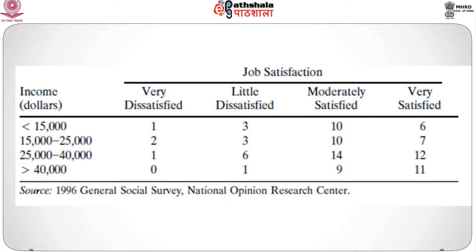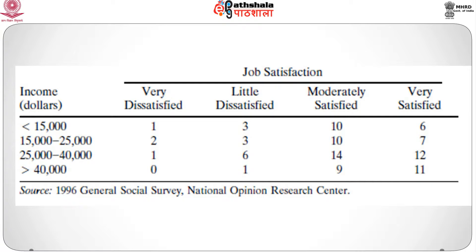The source of this data is the 1996 General Social Survey of the National Opinion Research Center. To define measures of association for ordinal data, we first have to define two fundamental concepts: concordance and discordance.